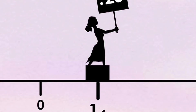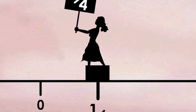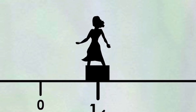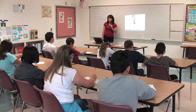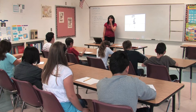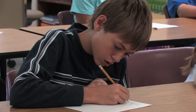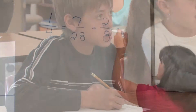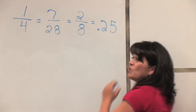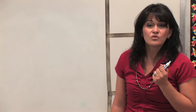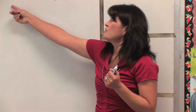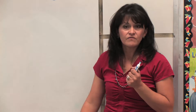The animation shows that 0.25, one fourth, two eighths, even seven twenty-eighths all have a place on the number line. This is really important — her name is one fourth, but she can go by other names. What's another way to say point two five? Twenty-five hundredths. So twenty-five hundredths as a decimal is exactly the same thing as one fourth. All of those are exactly the same thing.